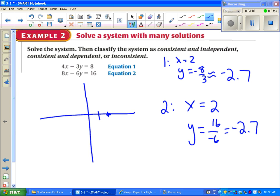X is 2. Y is negative 2.7. They're both the same line. We call this consistent and dependent. Consistent because there is a solution. Dependent because there are many solutions, instead of just one.